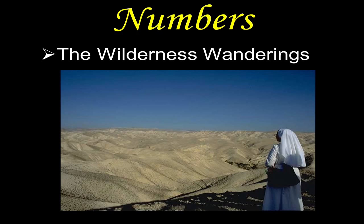That takes us to the book of Numbers, where they head to the promised land. It would take just under two weeks to get there, but it's going to take them 40 years to get in — because of unbelief. When they got to the border, they saw giants in the land and were afraid. They didn't think God would fight their battles, so they ended up wandering in the wilderness, that generation dying off. The book of Numbers is called Numbers because of the census — numbering the fighting males from 20 years old and above, both generations numbering just over 600,000 fighting men, giving you maybe two to three million people who came out of Egypt.